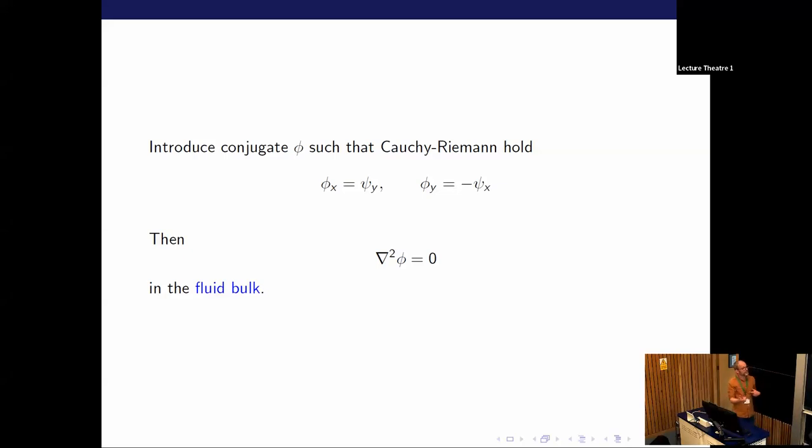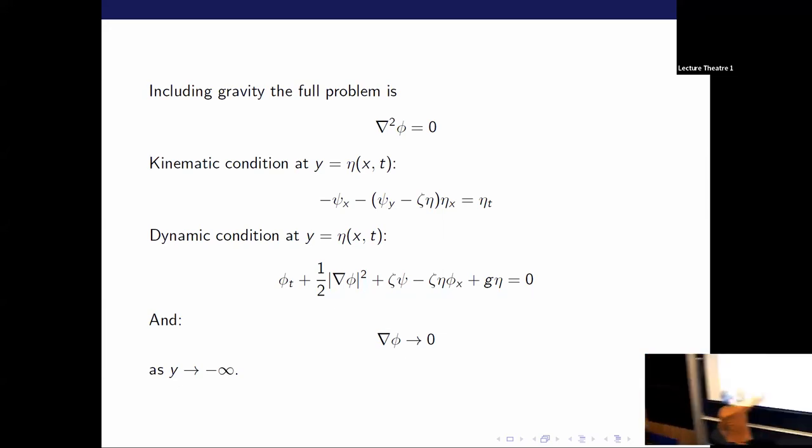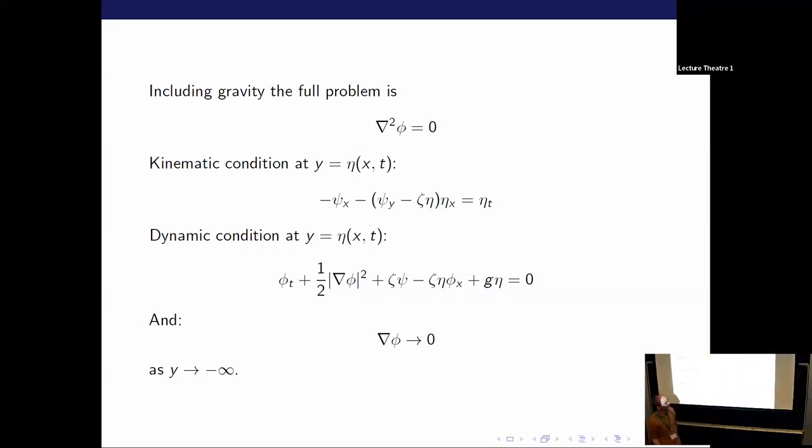Because you have Laplace's equation for psi, you can introduce a conjugate function, we call that phi, which is sort of almost, but not quite, the velocity potential. I'll probably just call it the velocity potential. That satisfies Laplace's equation as well. I'm just going to include gravity temporarily, and then knock it out in a second. If you include gravity, you get the full water wave problem if you also dropped vorticity out. There's Laplace's equation for the velocity potential, then the kinematic condition which includes the vorticity here, and then the dynamic condition which comes by virtue of the extension of Bernoulli's theorem to constant vorticity that Darren just talked about. In the dynamic condition, there's vorticity contributions through those two terms. And a long way below the surface everything's stationary.